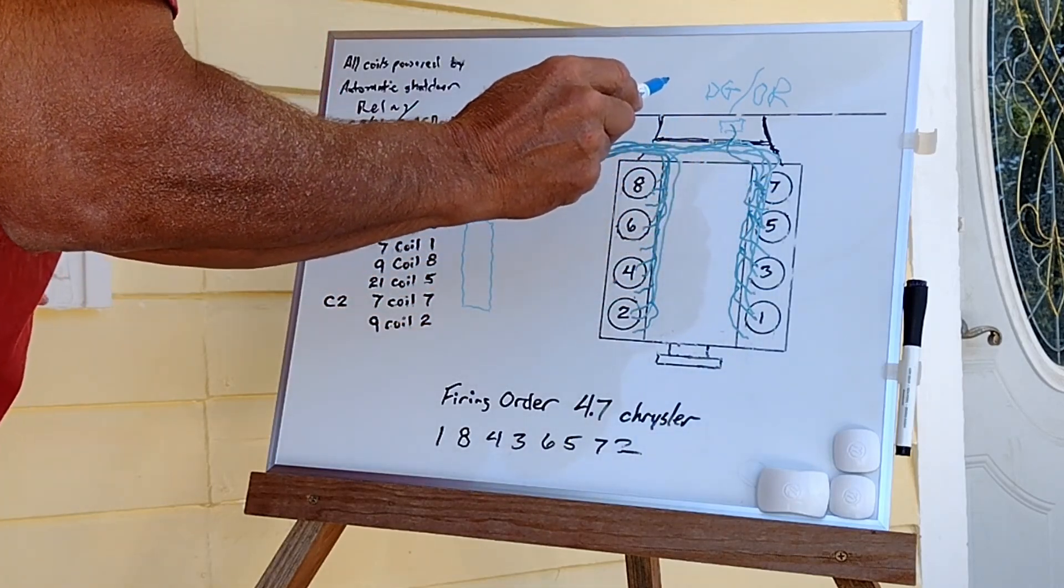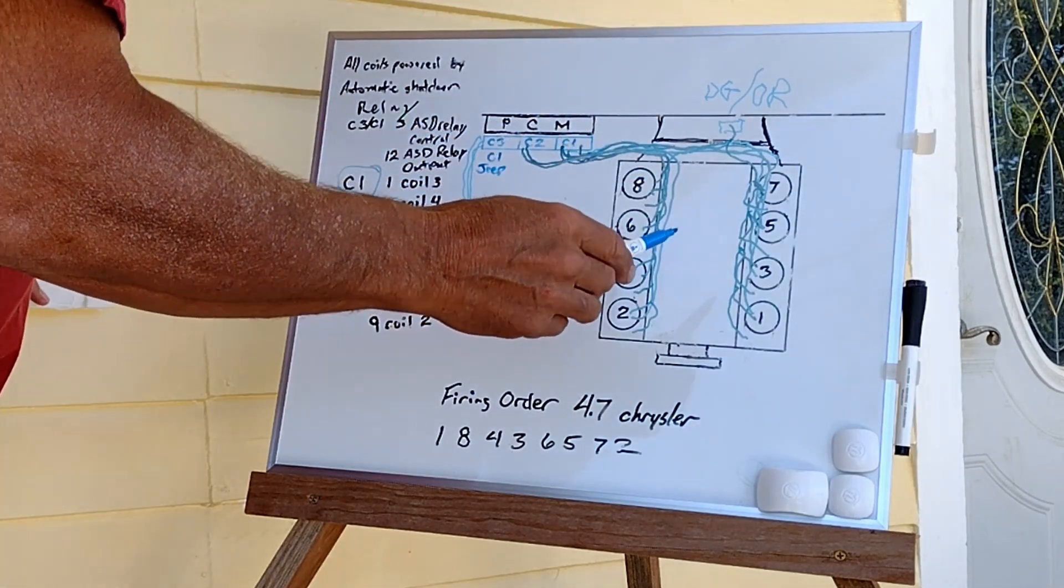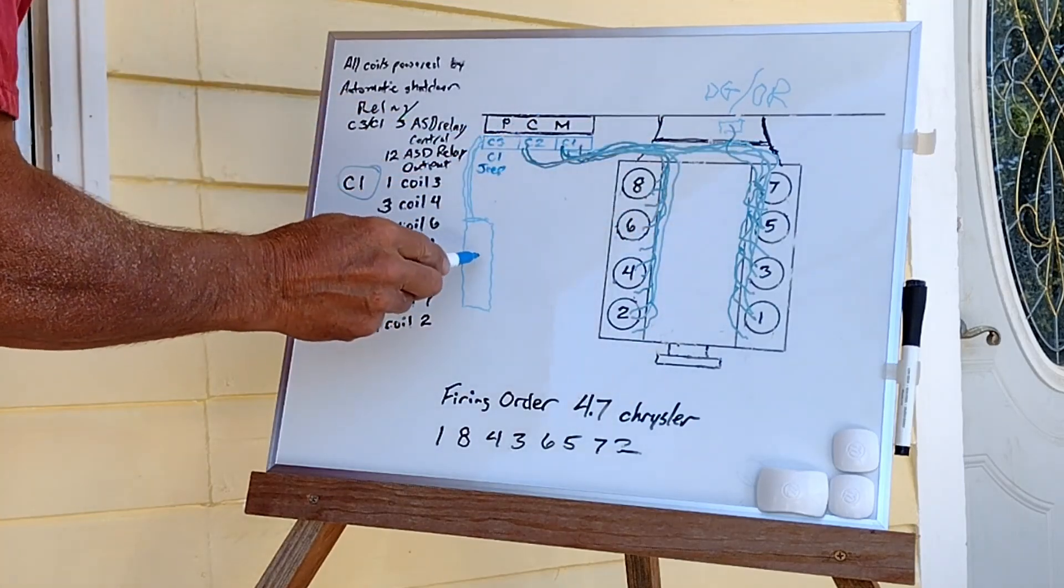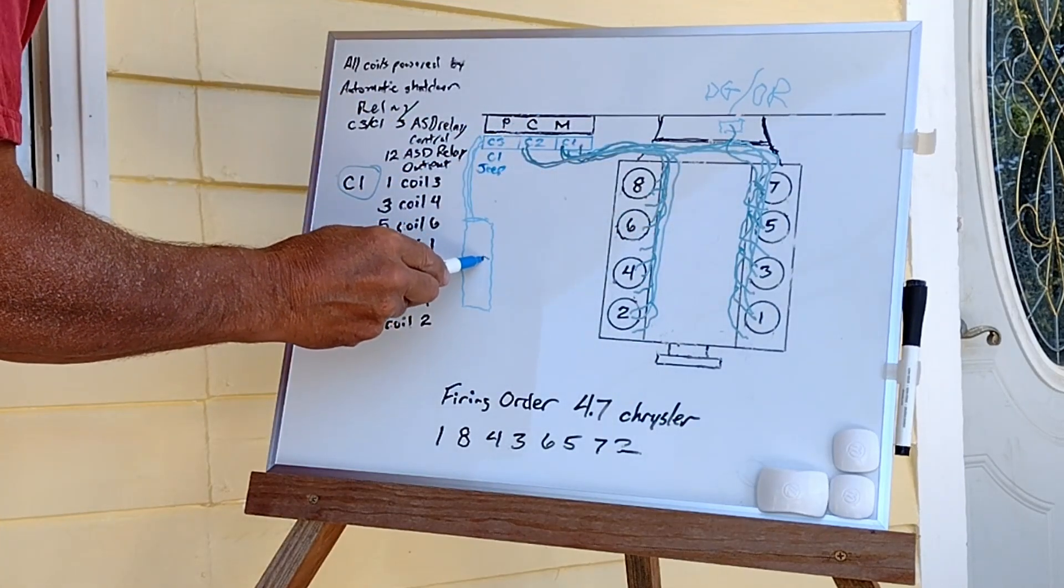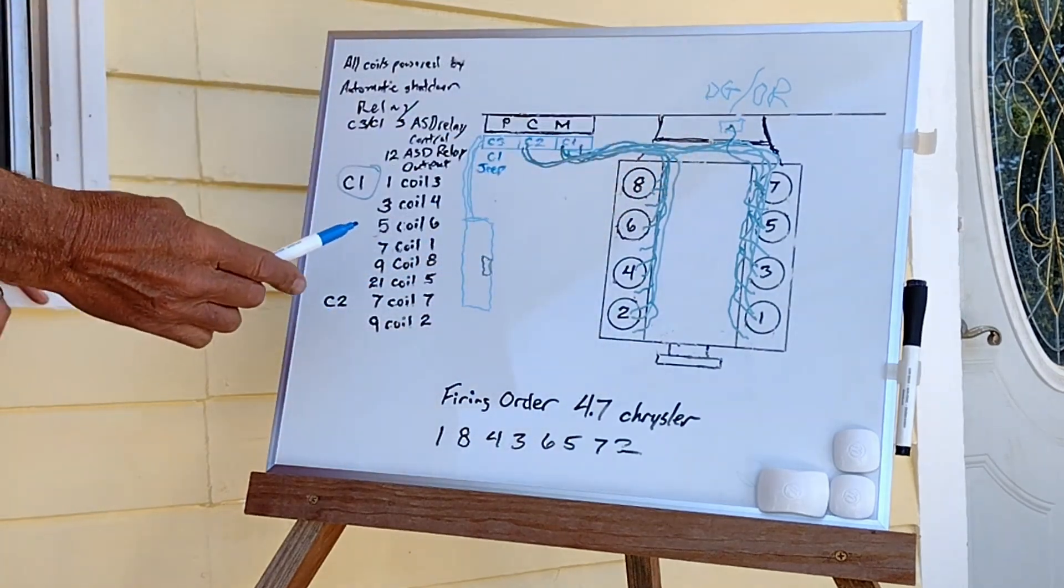Because your injectors also derive their battery positive from the 87 pin of the auto shutdown relay, which again, you'll pick up that wire over here.